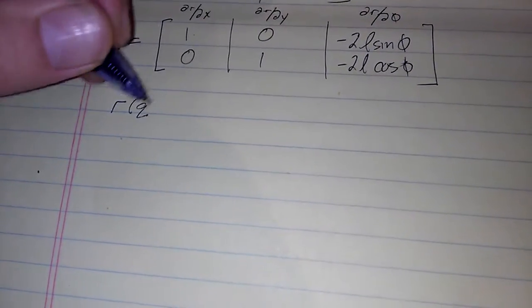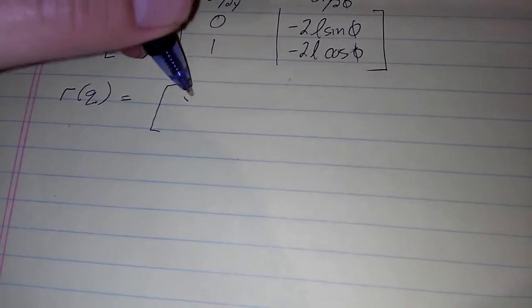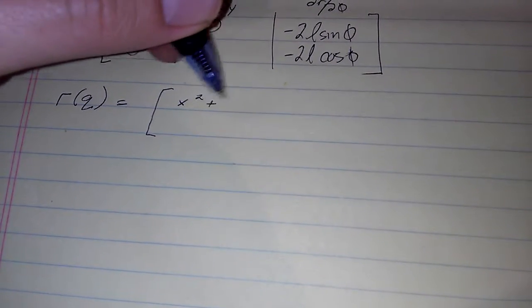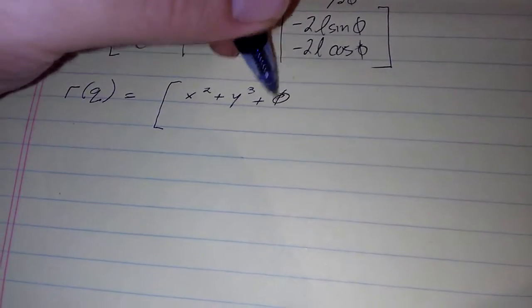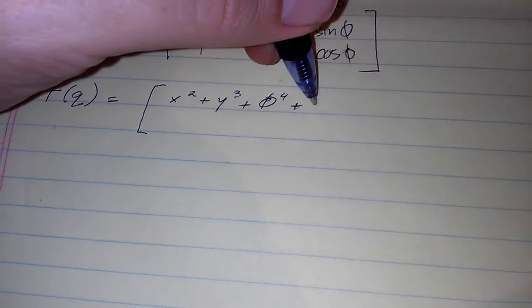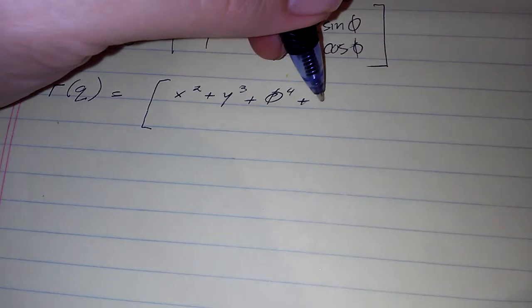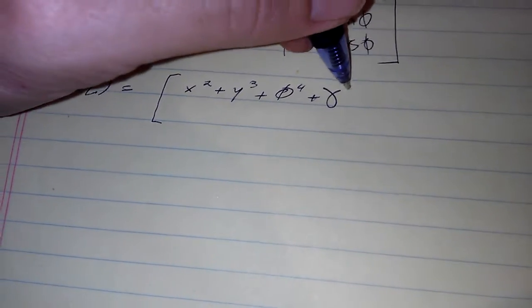Let's do another quick example just for the fun of it. Let's say r of q, and we'll make this a little bit easier in one way. Let's say r of q equals x squared plus y cubed plus phi to the fourth plus gamma to the third,